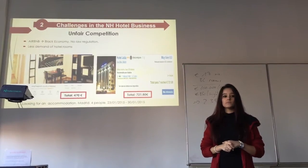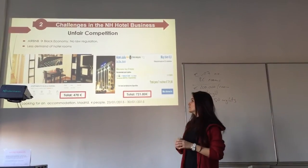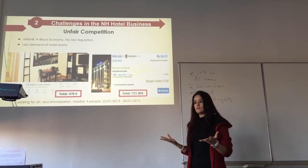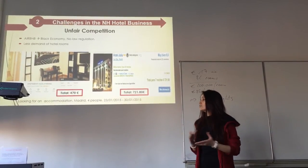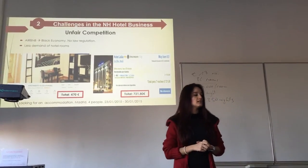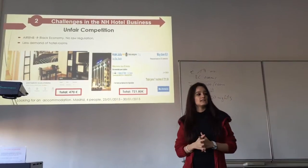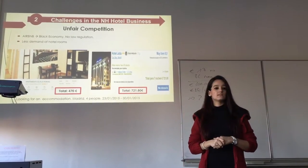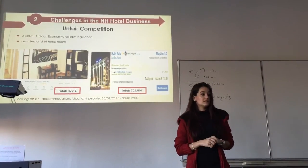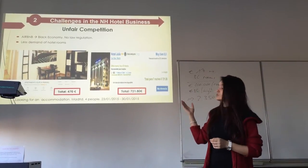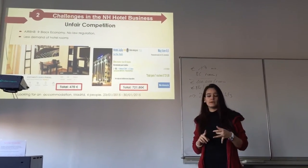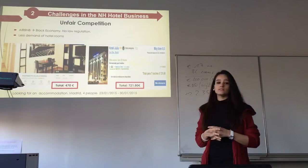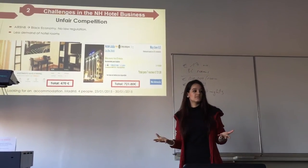Another challenge is unfair competition. Platforms like Airbnb offer accommodations — private houses and similar — at a lower price than hotels. Many people are choosing these alternatives instead of hotels, which is bad for the economy because tourism in Spain contributes to GDP and creates jobs. If everyone chose those alternatives, the economic contribution would shrink, and it also contributes to the black economy because these platforms are not regulated and don't pay taxes.